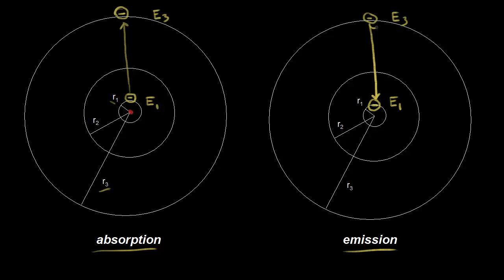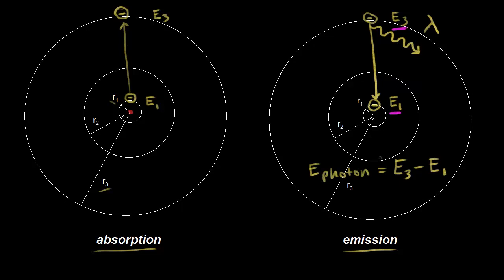We can represent that photon — this is how you usually see it in textbooks. We emit a photon which is going to have a certain wavelength; lambda is the symbol for wavelength. We need to figure out how to relate lambda to those different energy levels. The energy of the emitted photon is equal to the difference in energy between those two energy levels — the third energy level and the first energy level. So E3 minus E1 equals the energy of the photon.